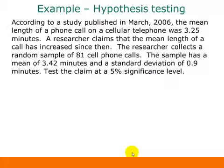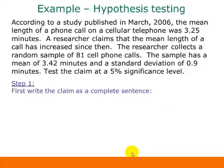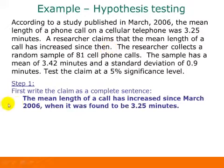We're going to go through one example of hypothesis testing through all five steps. For the first step, we first write the claim as a complete sentence. Where it says a researcher claims that the mean length of a call has increased since then, we want to put all the details into our statement. So we'll say the mean length of a call has increased since March 2006 when it was found to be 3.25 minutes.